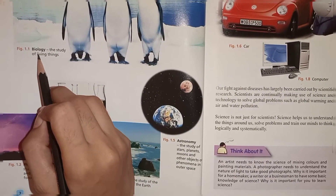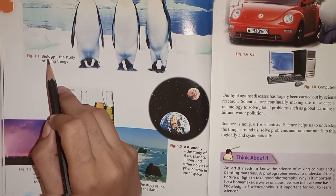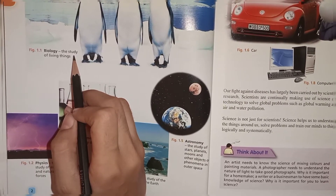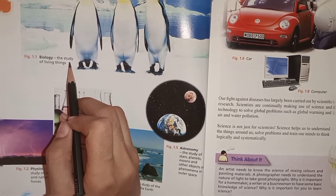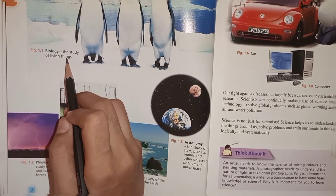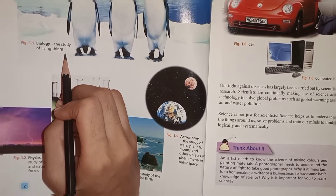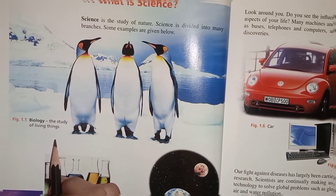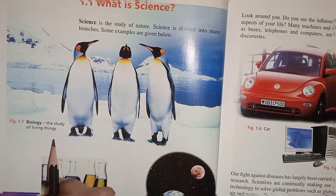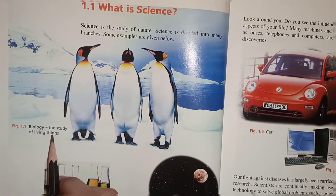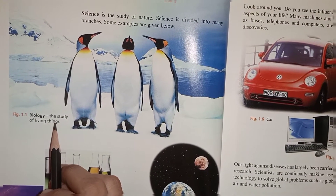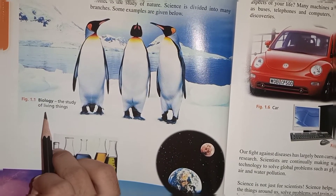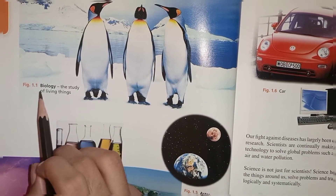The first topic is biology. Biology is the study of living things. The knowledge and information about living things is called biology. Living things include plants and animals, and humans are also included within animals. So biology is basically the study of plants and animals — the education and knowledge about plants and animals is called biology.